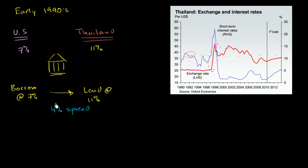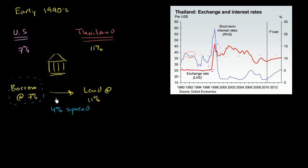What are the risks of borrowing in a foreign currency and lending in your own? The real risk is if the foreign currency were to appreciate dramatically relative to your own. But if you're a Thai bank in the early 90s, there's huge demand from people wanting to convert their currency into Thai baht. So much so that in order to maintain the peg, the Thai central bank is printing money and buying those dollars, building a huge reserve. So the peg seemed stable, you could just make this 4% spread — easy money. But risks you're not aware of can very easily crop up.